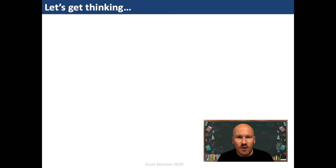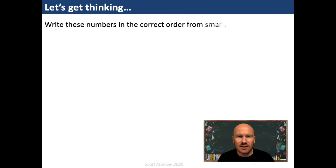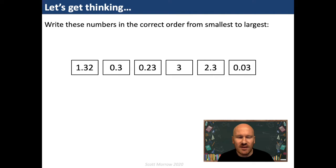To begin with, let's get thinking. Can you write these numbers in the correct order from smallest to largest? 1.32, 0.3, 0.23, 3, 2.3 and 0.03. Discuss these with a partner, justify your thinking by giving reasons, and then share your thoughts with the rest of the class.